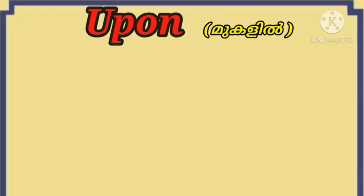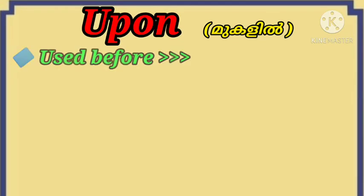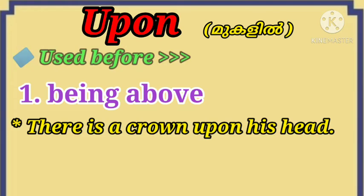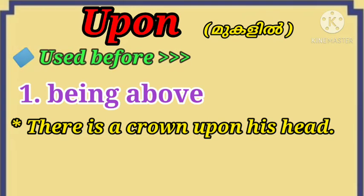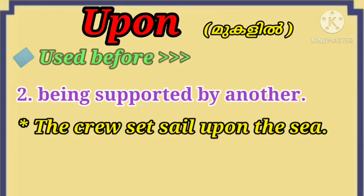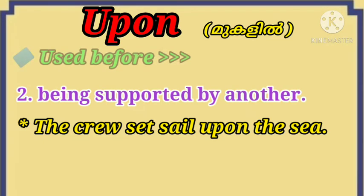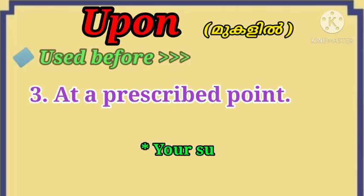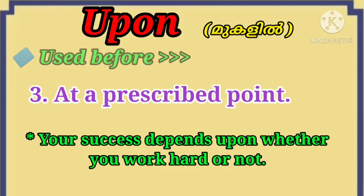The word meaning of the preposition 'upon' is very similar to the word 'on', but we use 'upon' to mention something in the sense of being above — for example, there is a crown upon his head. If we want to mention something being supported by another, we use 'upon' — for example, the crew set sail upon the sea. We also use 'upon' at a prescribed point — for example, your success depends upon whether you work hard or not.